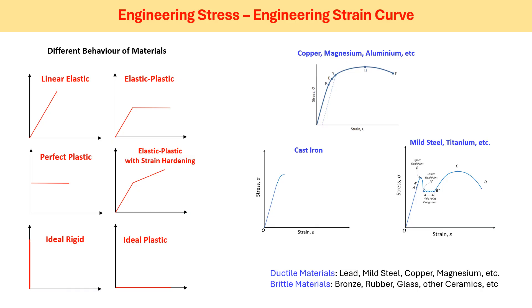Certain materials such as mild steel and titanium show a different behavior — neither elastic-plastic with strain hardening nor linear elastic. After the elastic limit, the material reaches an upper yield point, then the load suddenly drops rapidly. At constant load, a certain amount of plastic deformation keeps happening, followed by strain hardening up to the UTS point, and then fracture. This heterogeneous transition from elastic to plastic limit is known as yield point phenomena behavior, shown by mild steel and titanium, which are also considered ductile materials.